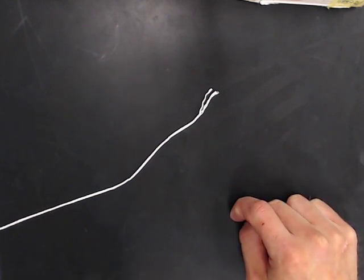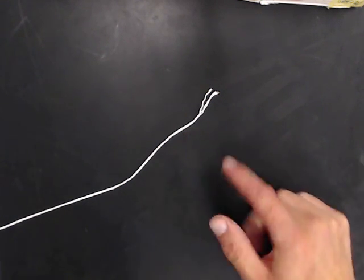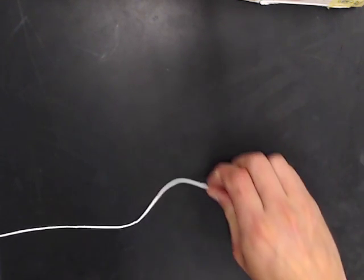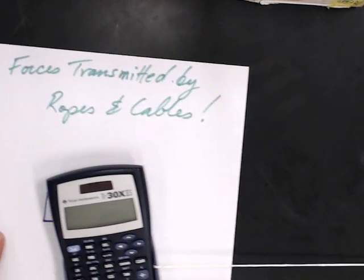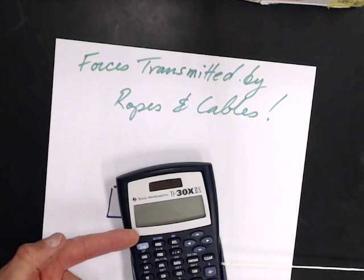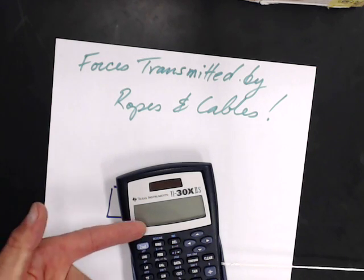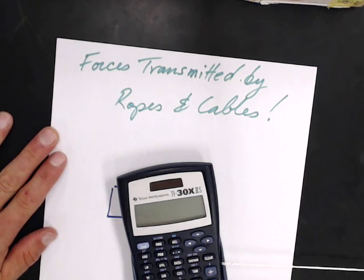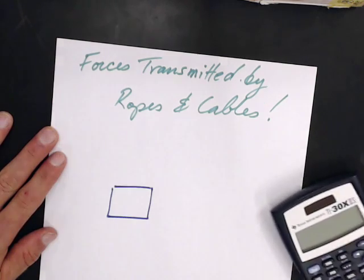Hey look, here's a rope or a string. Let's pull it and see what happens. So when I pull on it, it transmits a force down the rope and pulls something else. So let's get that out of the way.